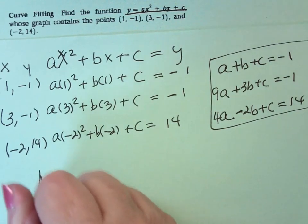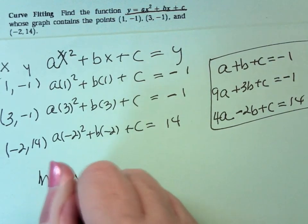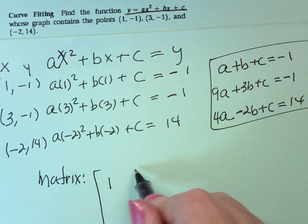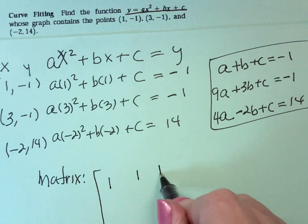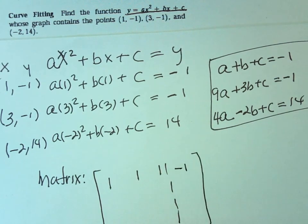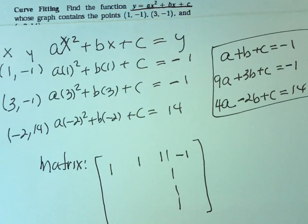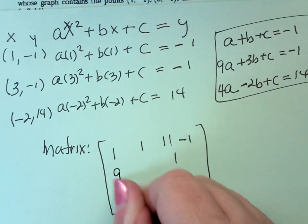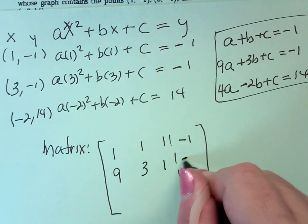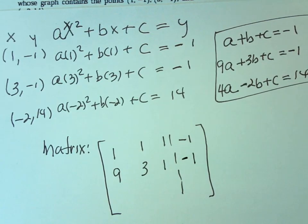The matrix for that system will be 1, 1, 1, negative 1. 9, 3, 1, negative 1. 4, negative 2, 1, 14.